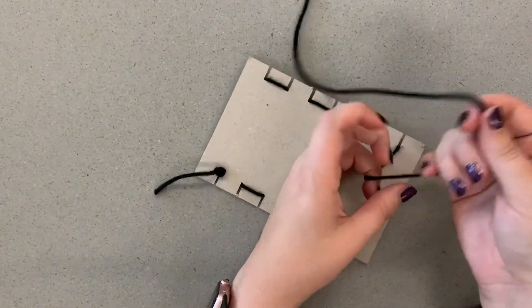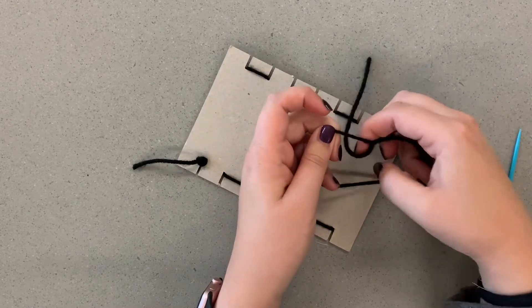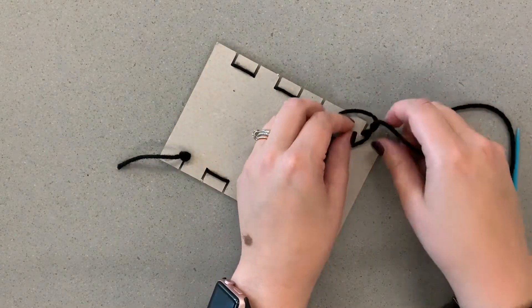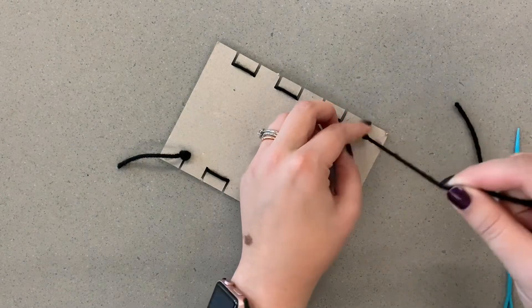So when you get to the end, you're going to make a double knot again. Try to get it as close to the cardboard as you can. I actually think this knot is a little easier than the first knot.